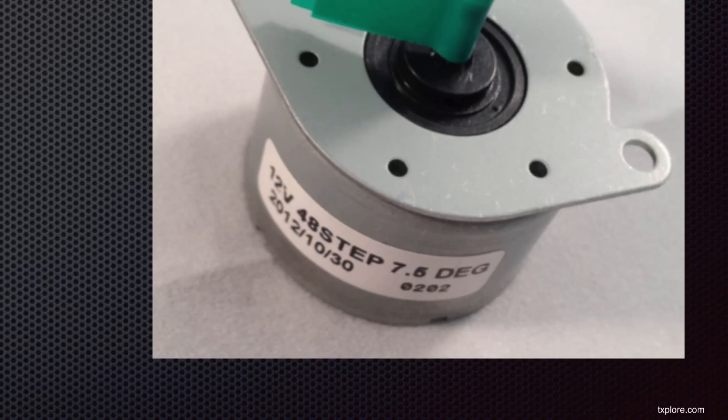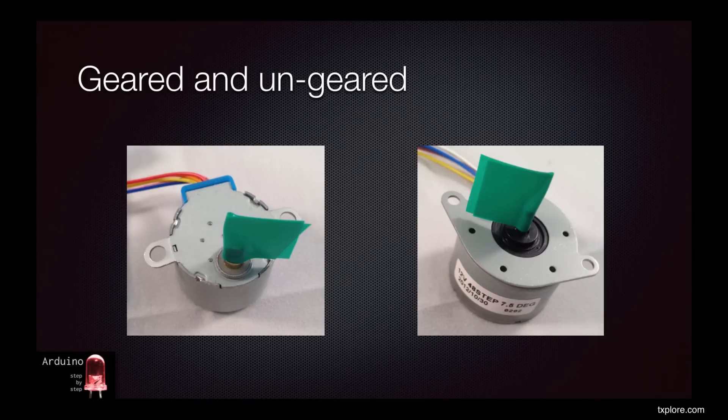You can also do a quick calculation and see that 360 divided by 48 is 7.5 degrees. Therefore, 7.5 is the minimum accuracy for this motor. If you need something more accurate than this, then you can use a higher phase motor or a geared motor.